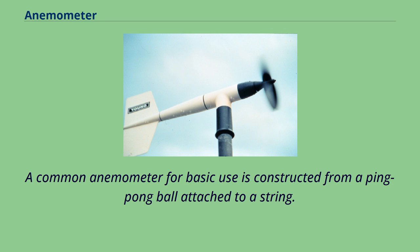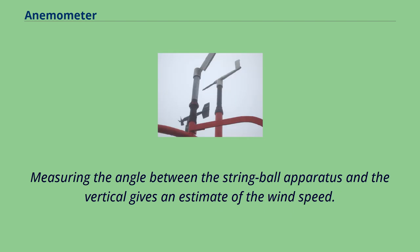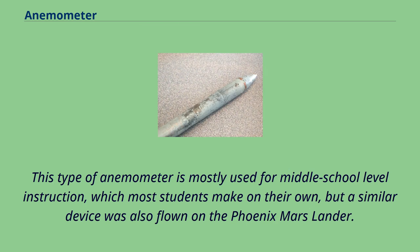A common anemometer for basic use is constructed from a ping-pong ball attached to a string. When the wind blows horizontally, it presses on and moves the ball. Because ping-pong balls are very lightweight, they move easily in light winds. Measuring the angle between the string ball apparatus and the vertical gives an estimate of the wind speed. This type of anemometer is mostly used for middle school-level instruction, which most students make on their own, but a similar device was also flown on the Phoenix Mars Lander.